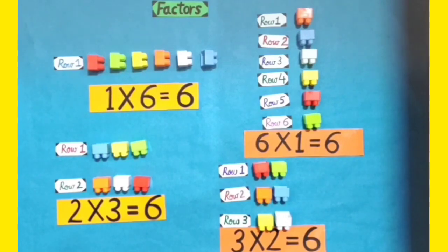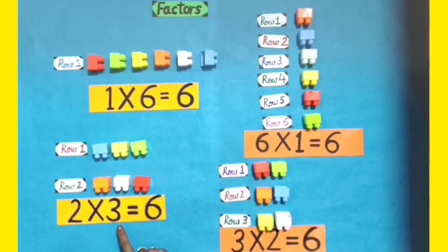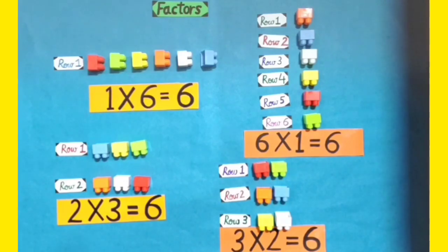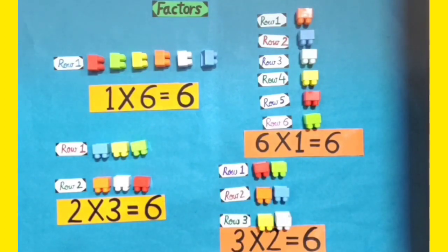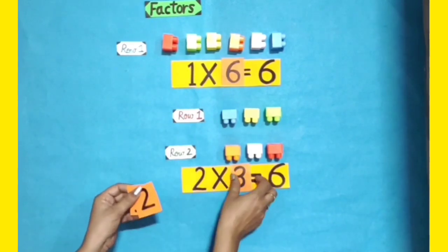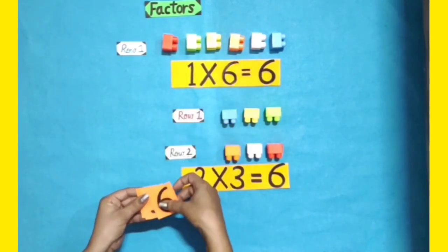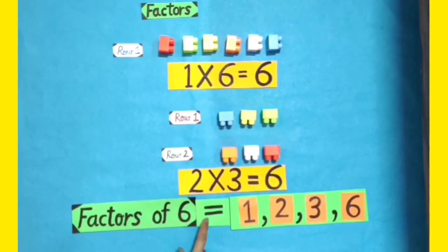So dear students, which of the arrangements can be written in multiplication form? 1 into 6, 6 into 1, 2 into 3, and 3 into 2. We all know that by changing the order of digits we get the same answer, so we take one form from each pair. Therefore, the factors of 6 are 1, 2, 3, and 6.